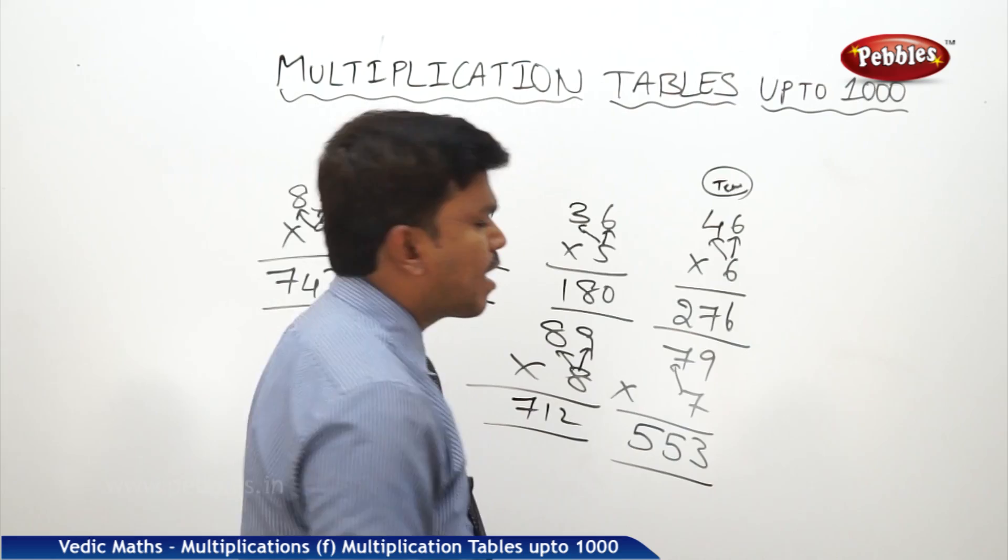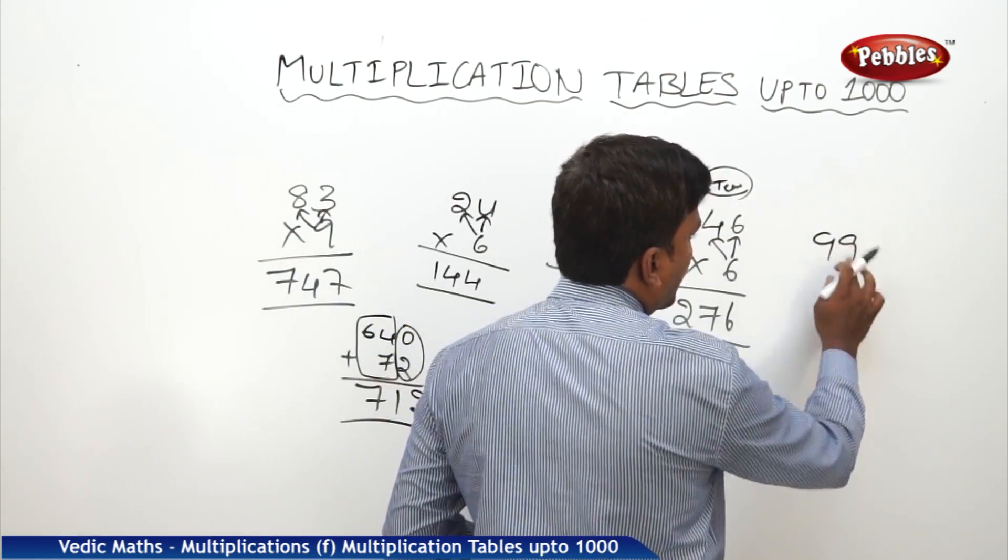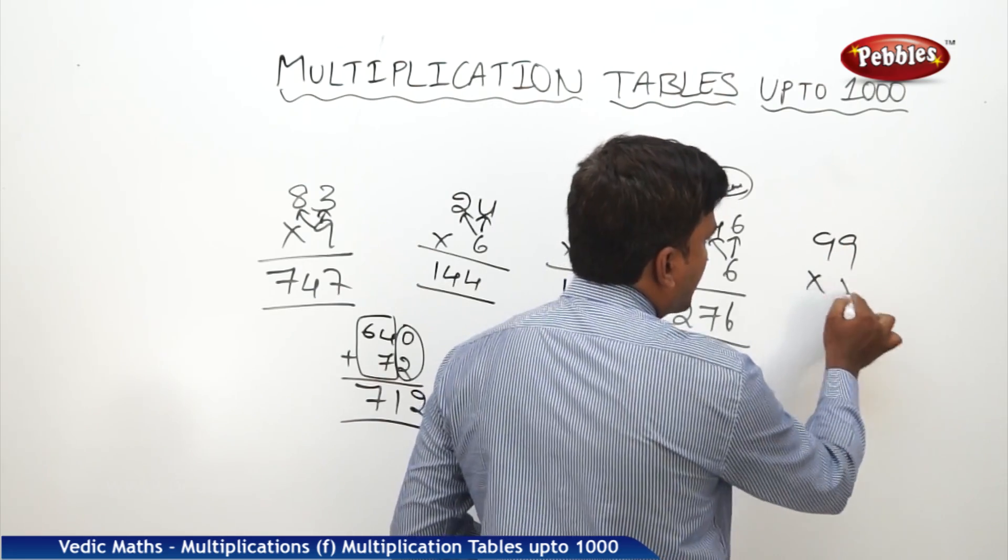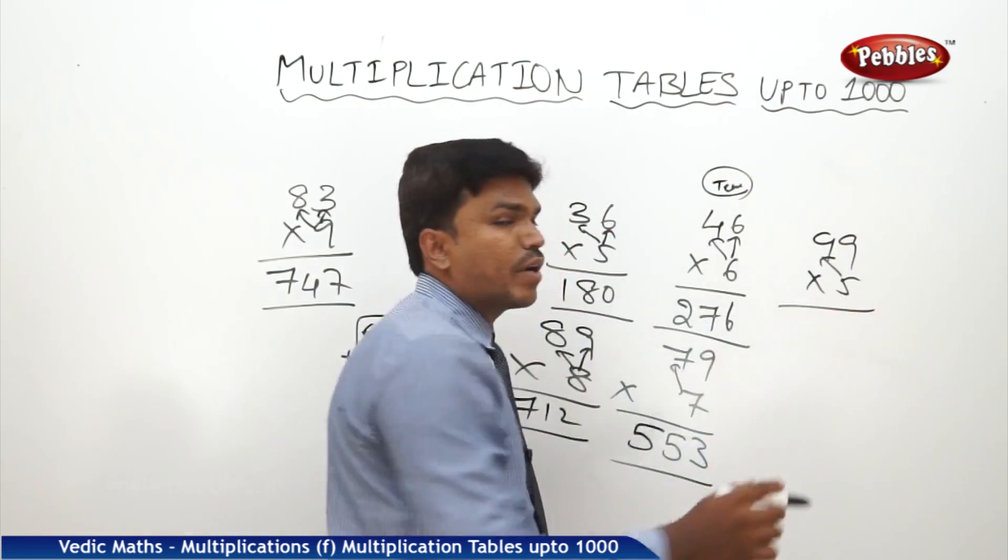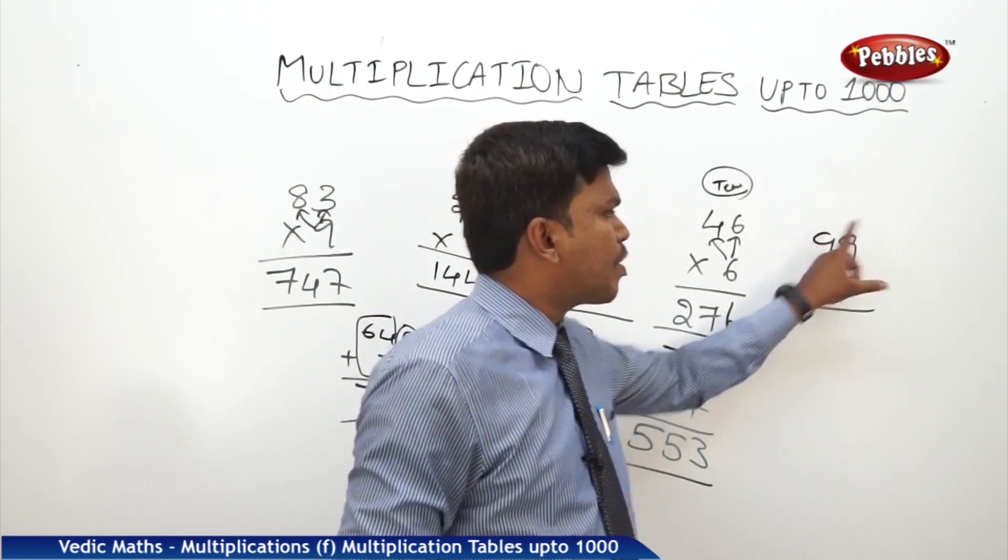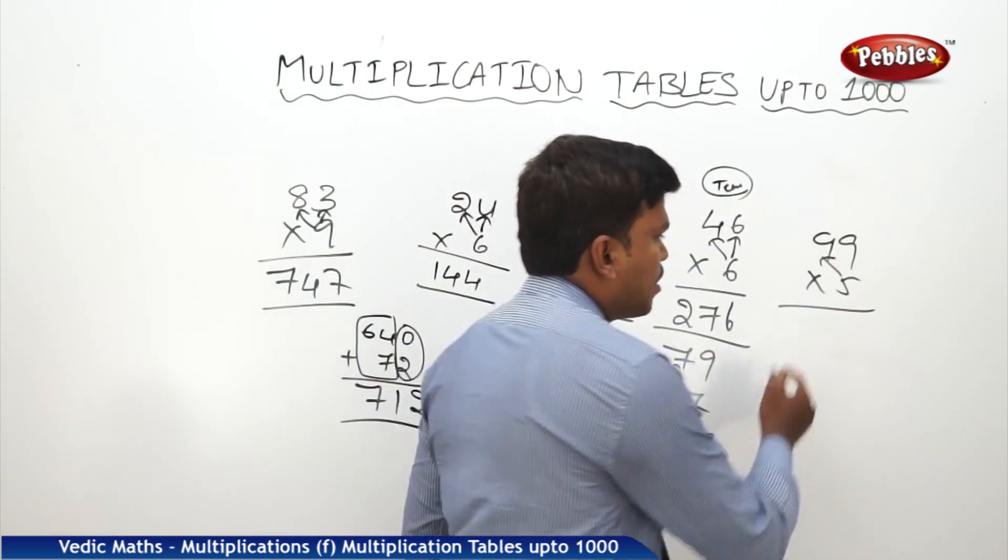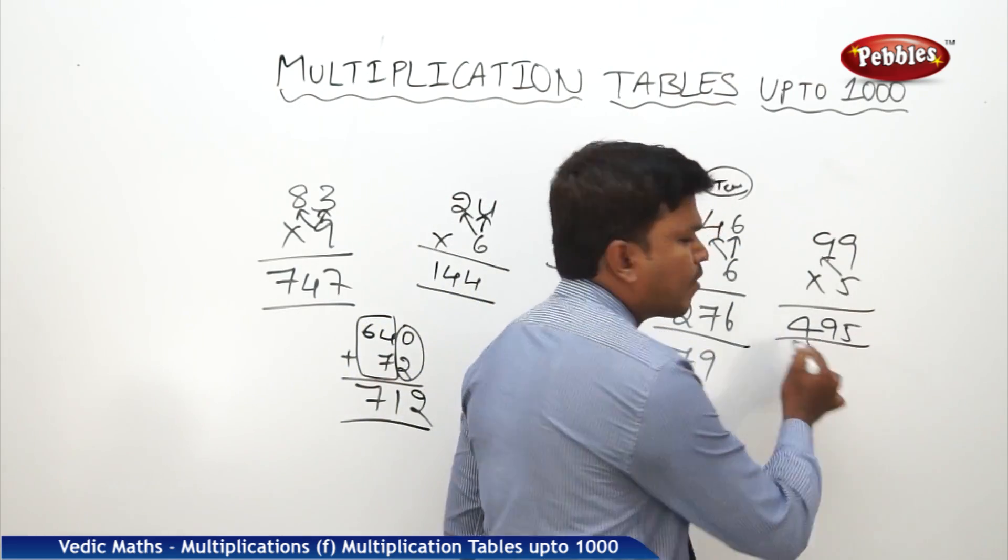Like that we can calculate. You tell me this time, what is 99 five times? Simply you have to say 450 plus 45. 450 plus 45, it is 495.